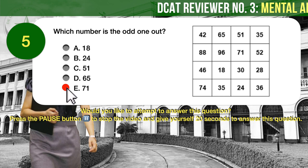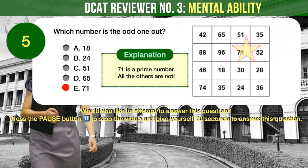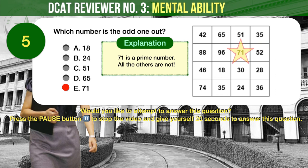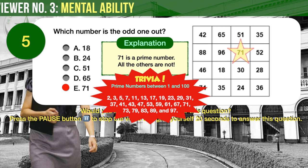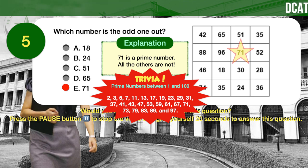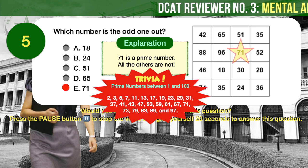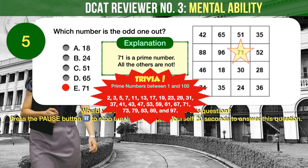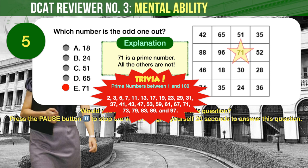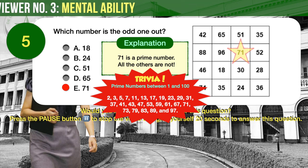The correct answer is E — number 71 is the odd one out, because 71 is a prime number while all the others are not. Did you know there are 25 prime numbers between 1 and 100? It may be worthwhile to memorize all prime numbers below 100, as they are often featured in mathematics and numerical tests.